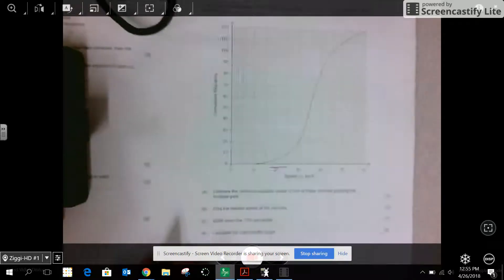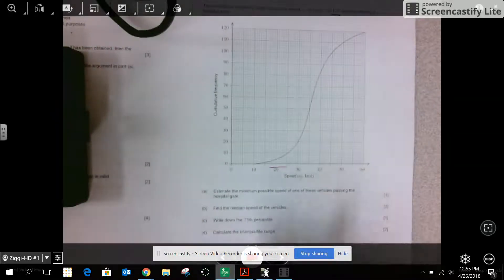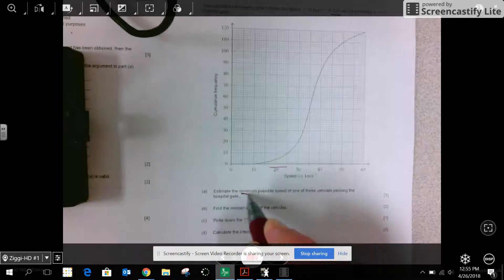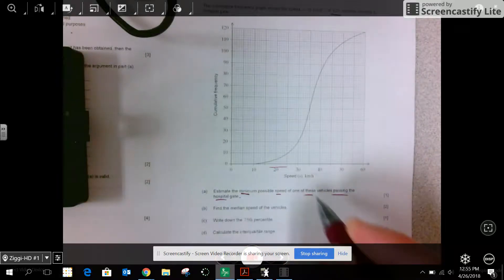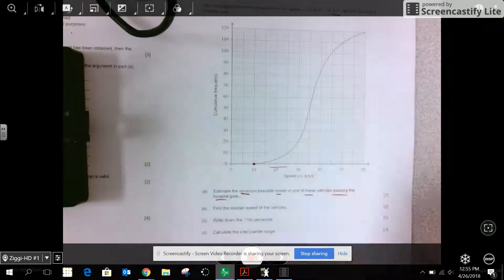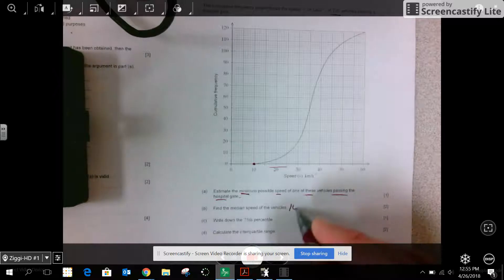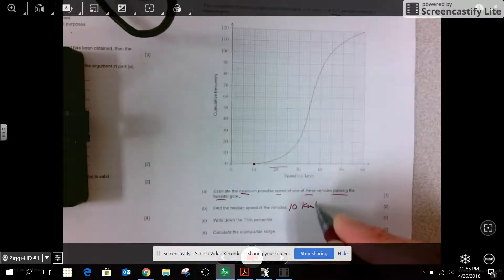Answer the questions. I'm going to draw them fast. You'll use a straight edge when you do this. Estimate the minimum possible speed passing through the hospital gate. So it looks like right here, it's about 10 kilometers per hour.